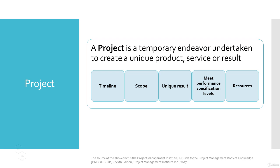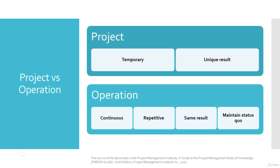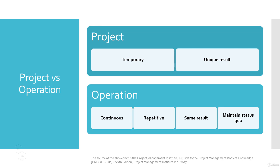There is another important concept you should be aware of — the difference between a project and an operation. Usually we have two types of work carried out in an organization, which are called project and operations. A project has a definite timeline and produces a unique product, while the operation on the other hand is described as the opposite of the definition of a project.